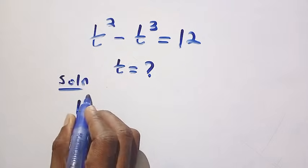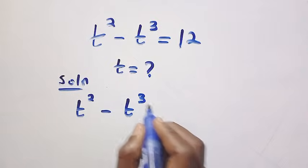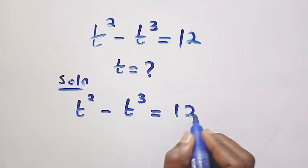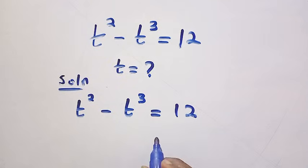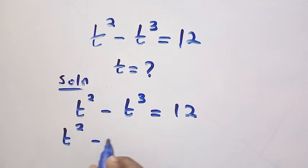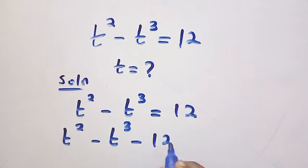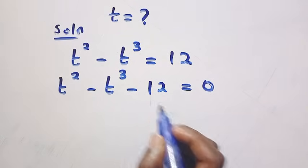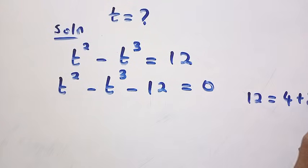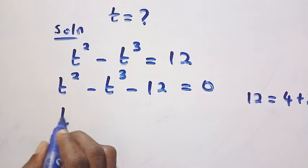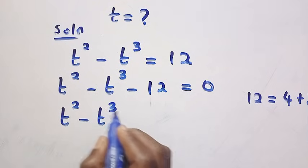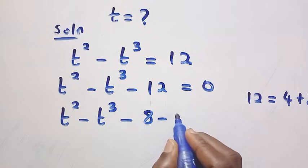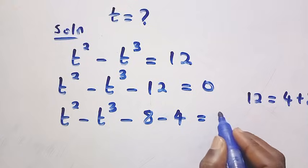So here we have t squared minus t cubed equals 12. We are going to transfer this 12 to this side, giving us t squared minus t cubed minus 12 equals 0. In the next step, we are going to split this 12 into the sum of 4 and 8. So here we have t squared minus t cubed minus 8 minus 4 equals 0.